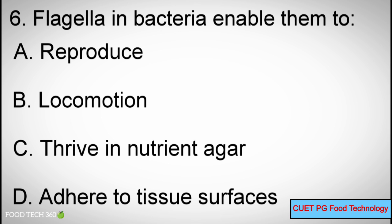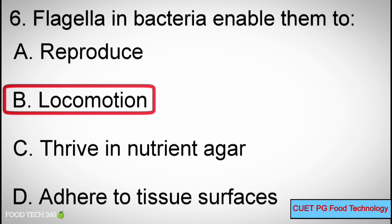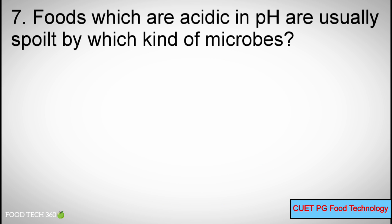Question Number 6: Flagella in bacteria enable them to — Options A: Reproduce, B: Locomotion, C: Thrive in nutrient agar, D: Adhere to tissue surfaces. Correct answer: B, Locomotion.